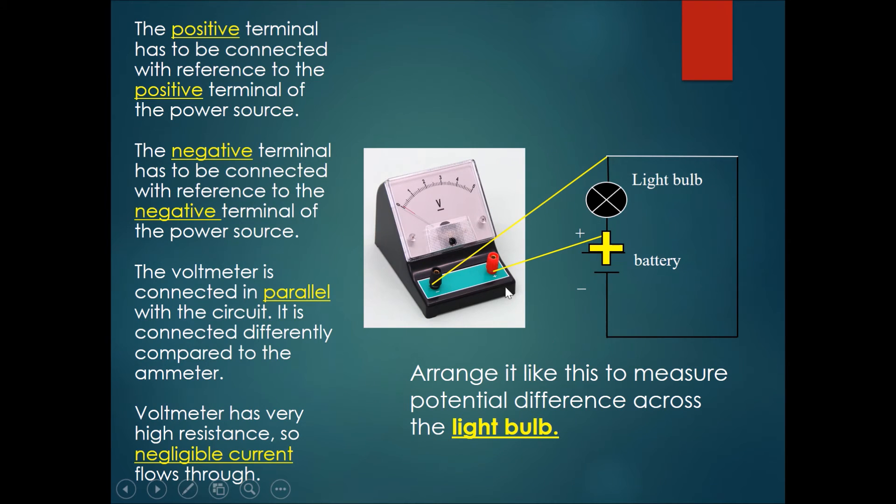If you wanted to measure the potential difference across a light bulb instead, you would arrange it like this, whereby the plus sign references the positive terminal over here of the power source, and the negative terminal connected over here in reference to the negative terminal of the power source. But since it's over the light bulb, you will actually measure the potential difference across the light bulb here instead.